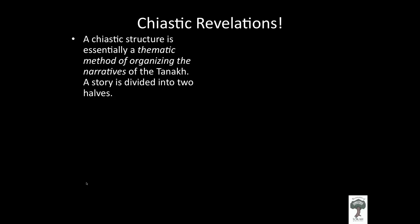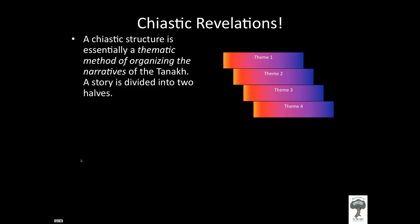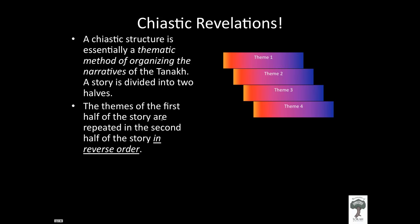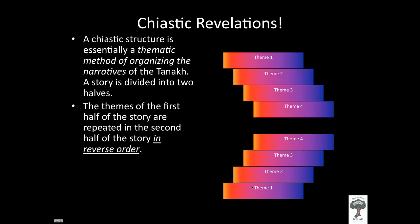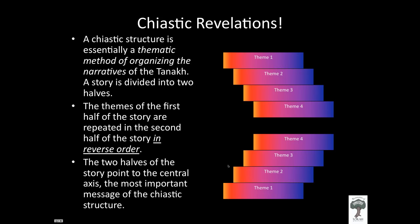A chiastic structure is essentially a thematic method of organizing the narratives of the Tanakh and also the New Testament. A story is typically divided into two halves. In the first half, you may have certain themes developed — theme one, theme two, theme three, and theme four. Then in the second half of the story, you will see the same themes but in reverse order. So whereas theme one was first in the first half, theme one will be last in the second half of the story.